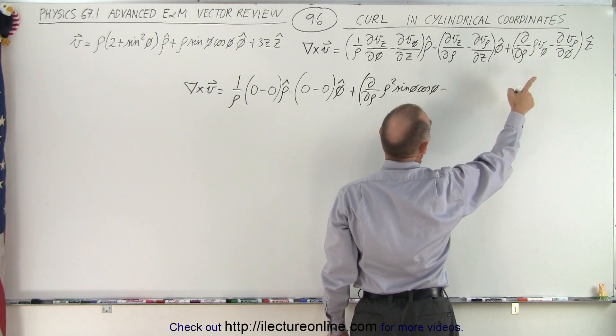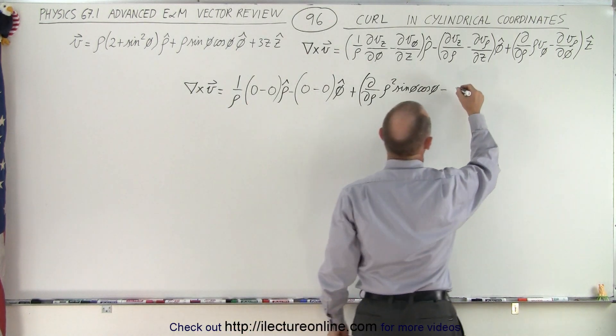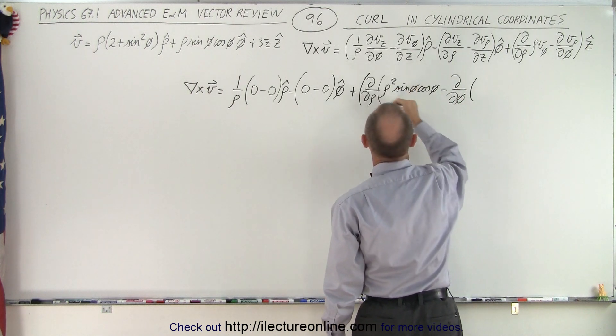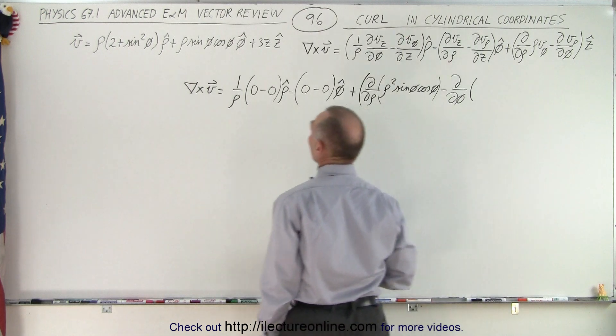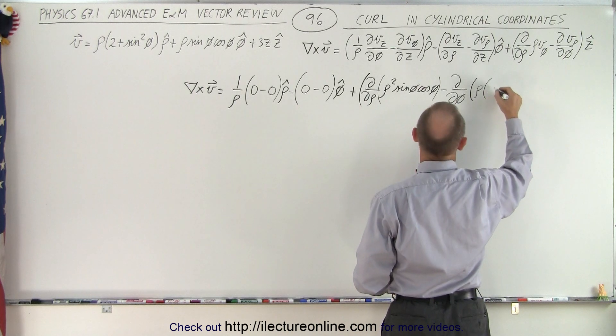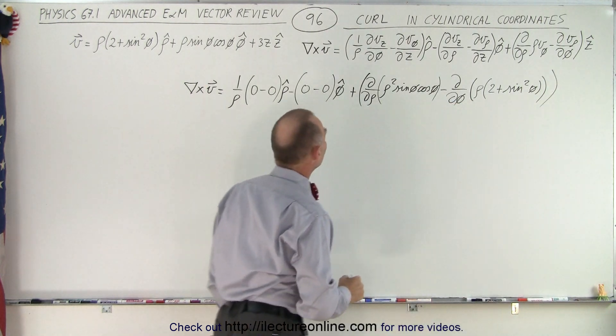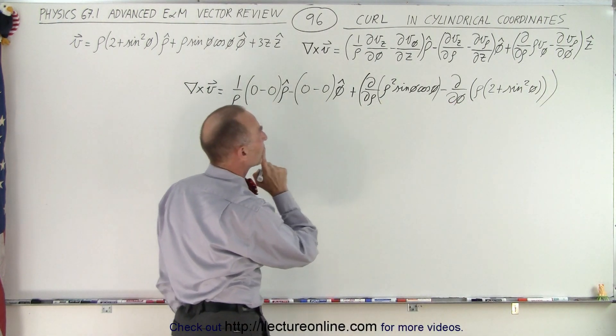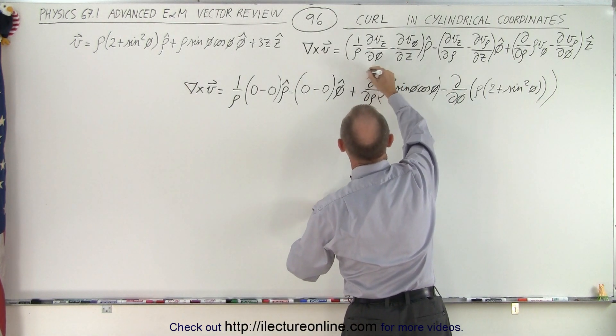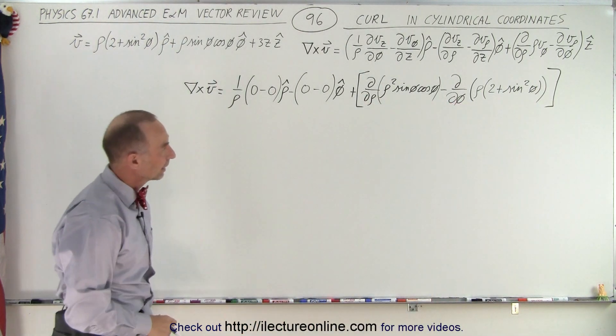Minus the partial derivative with respect to phi of the rho component, which is right here. So let's just go ahead and write that out. The partial derivative with respect to phi of, and it may not be a bad idea to put parentheses around there. So we have rho times two plus the sine square of phi. And the big parentheses at the end for the start. I didn't put a parentheses. Let's see here. We have plus this here. I think I'll put brackets here to make it a little bit better. Put a bracket here and put a bracket there. That cleans it up a little bit more.